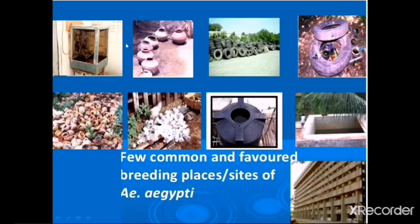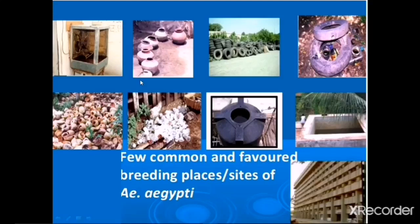The preferential breeding sites of Aedes aegypti are almost entirely domestic man-made water receptacles. It is found in and around households, construction sites, factories, unused tires, flowerpots, and coolers. These are among the most common domestic breeding sites of Aedes aegypti.